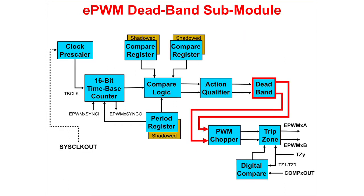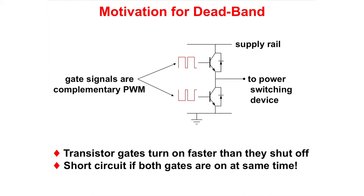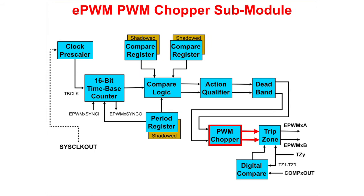The deadband submodule provides a means to delay the switching of a gate signal, thereby allowing time for gates to turn off and preventing a short circuit. Power switching devices turn on faster than they shut off, which would momentarily provide a path from supply rail to ground giving a short circuit. The deadband submodule alleviates this issue. The PWM chopper submodule uses a high frequency carrier signal to modulate the PWM waveform. This is used with pulse transformer based gate drives to control power switching elements.